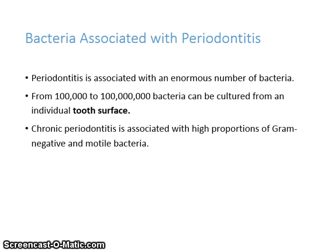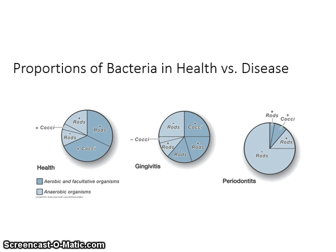Periodontitis is associated with an enormous number of bacteria. From 100,000 to 100 million bacteria can be cultured from an individual tooth's surface. Chronic periodontitis is associated with high proportions of gram-negative and motile bacteria. Figure 6.6 on page 102 shows proportions of bacteria in health versus disease, and the relative proportions of facultative and anaerobic organisms found in gingival samples. Notice the increase in proportion of gram-negative rods progressing from health to periodontitis.